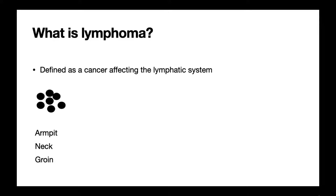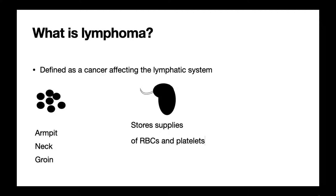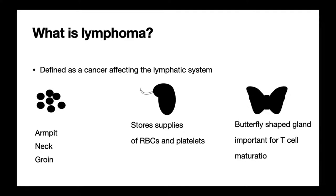It's also important to remember that there are a number of other organs affected in lymphoma that also play a part in the lymphatic system. These include the spleen, which is an important organ for the emergency supply of red blood cells and platelets — for example, if the patient has severe bleeding. Additionally, another important organ to consider is the thymus, a butterfly-shaped gland important for the maturation of T cells.